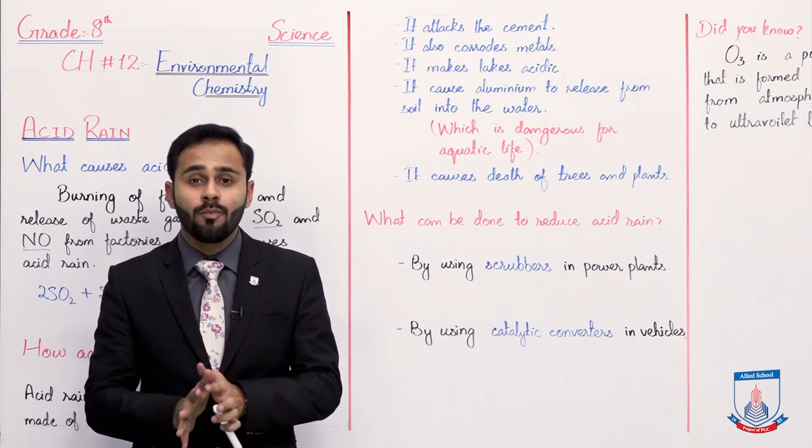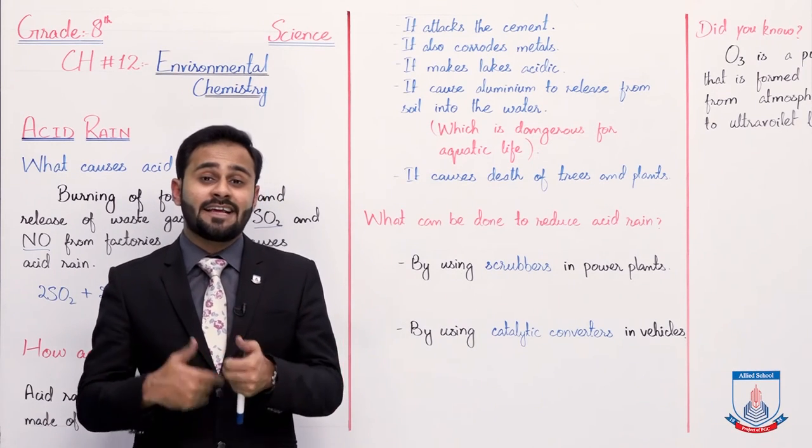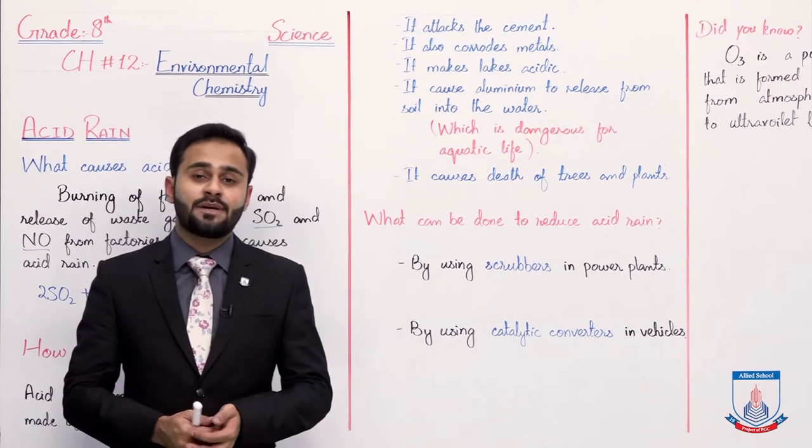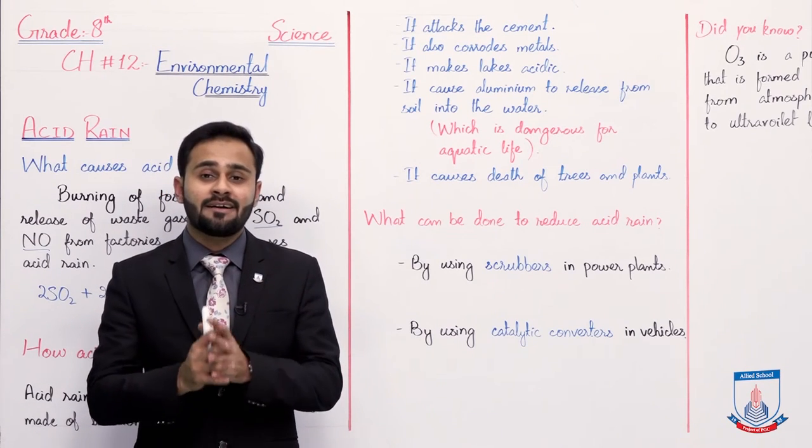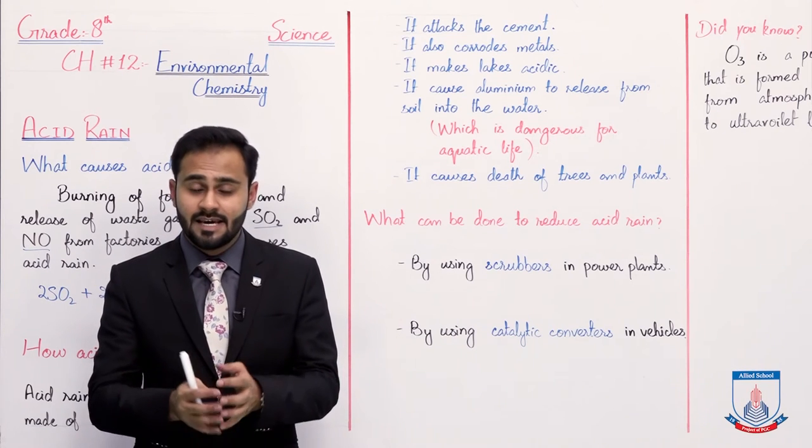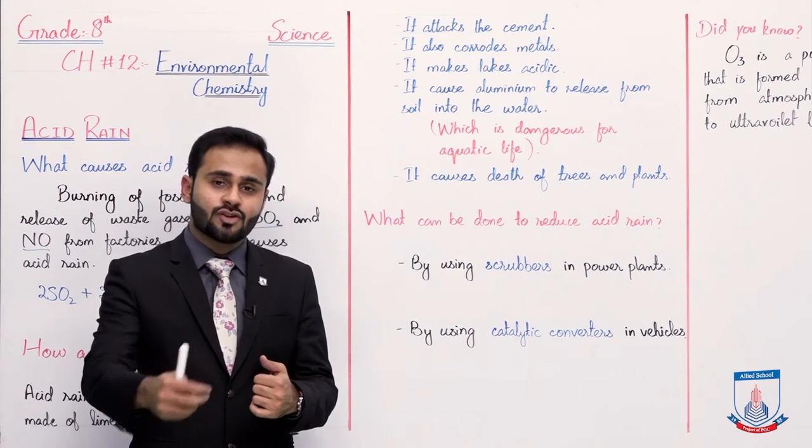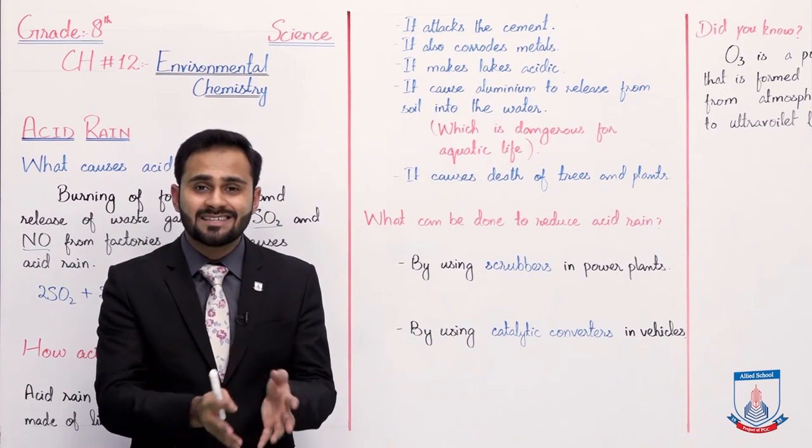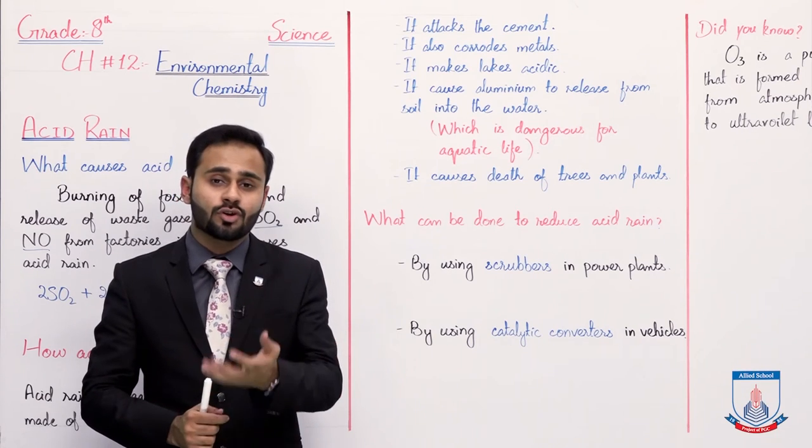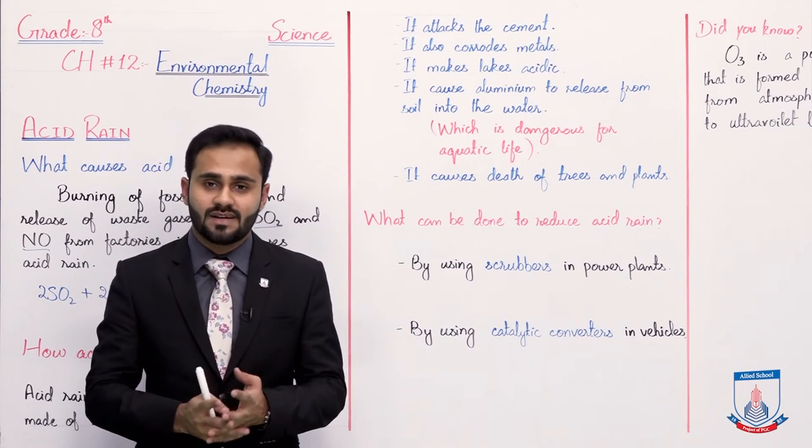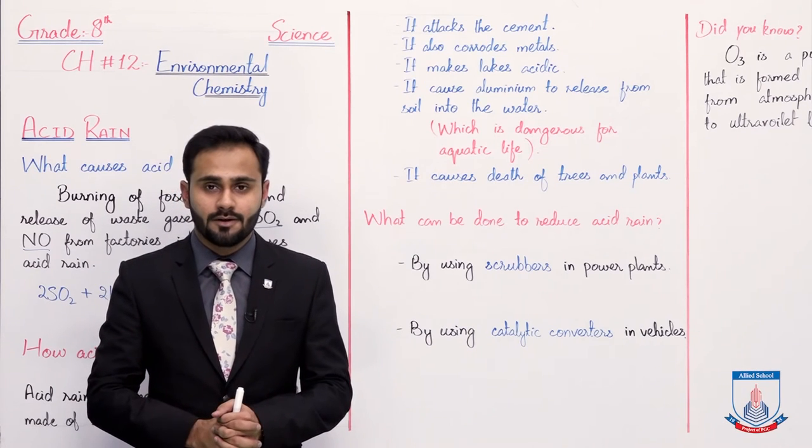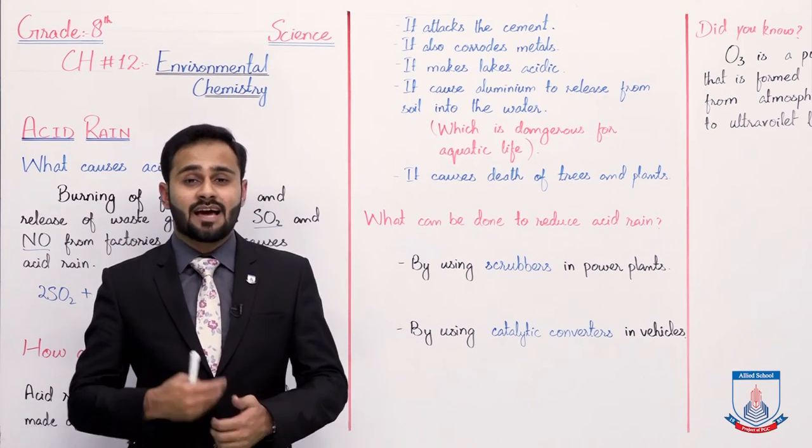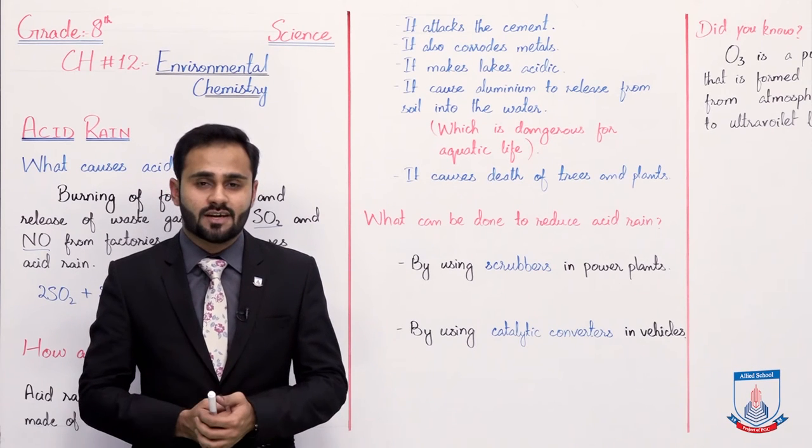Okay, so I hope you can understand now that acid rain is so dangerous. And similarly, it causes the death of trees and plants. Now the question is, what can be done to reduce acid rain?